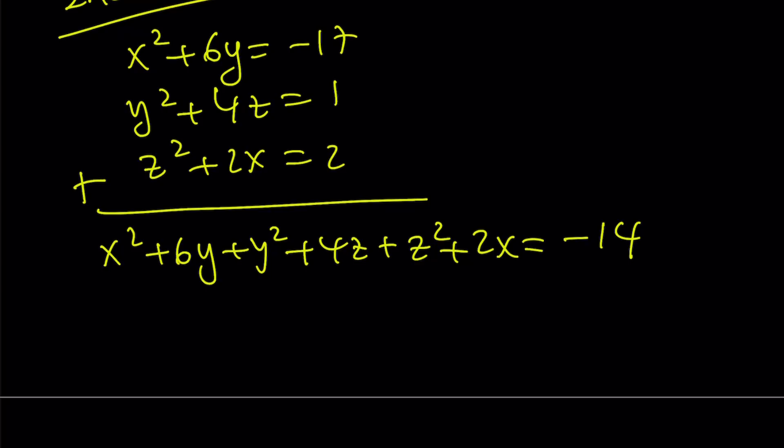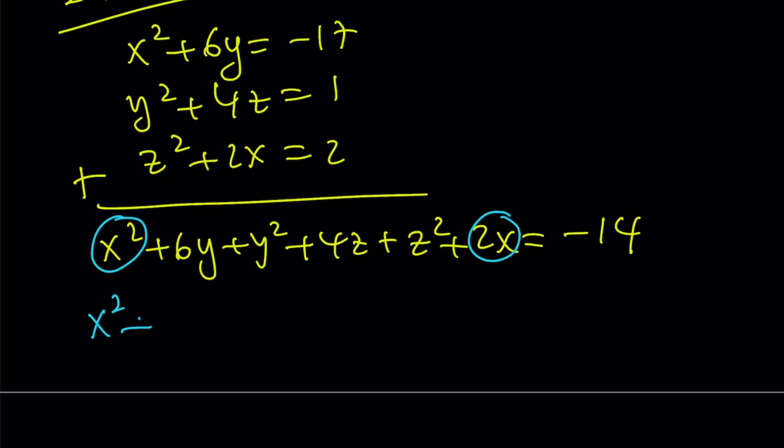I would like to complete the square. So I have an x squared and I have a 2x, so then I can write this as x squared plus 2x, and then I want to add 1 to this. We're going to keep track of what we're adding, and now we're going to add that on both sides. And then I have the y squared with the 6y. That requires a 9, as you know, to complete the square. Keep track of the numbers.